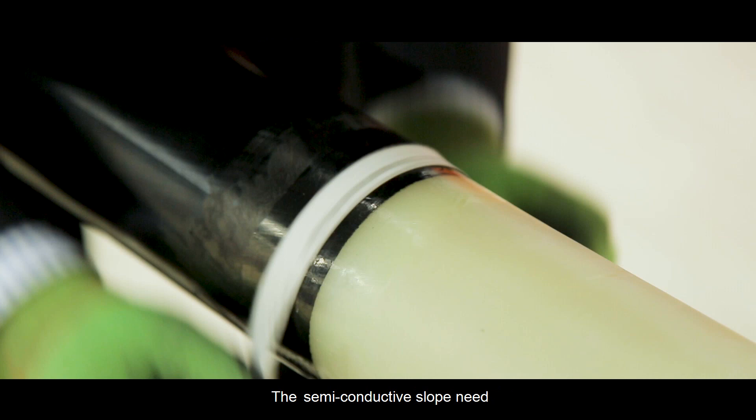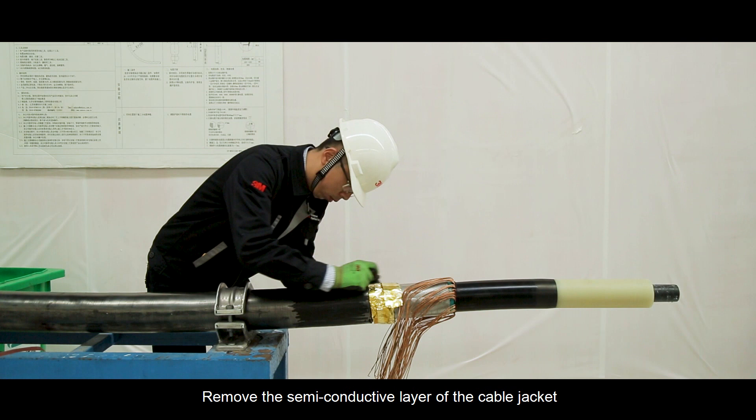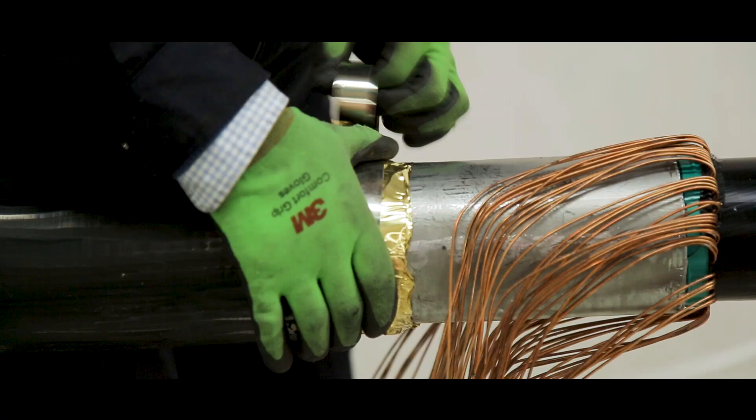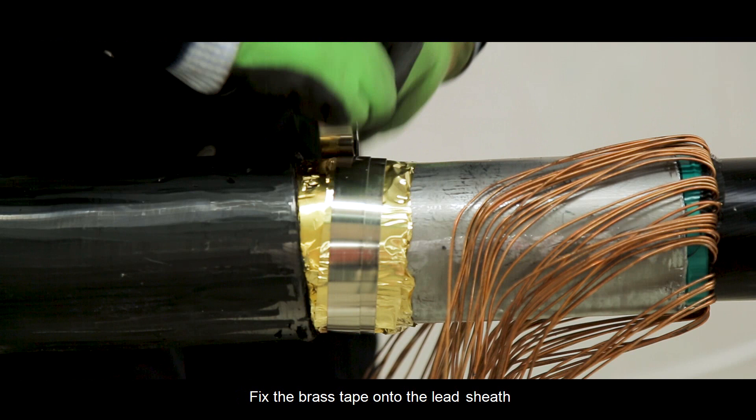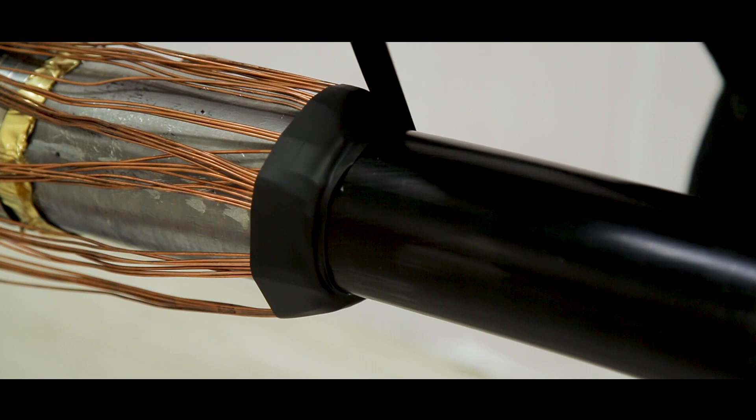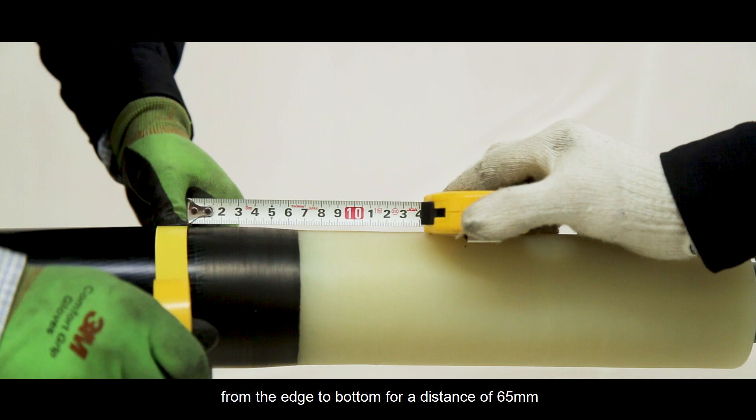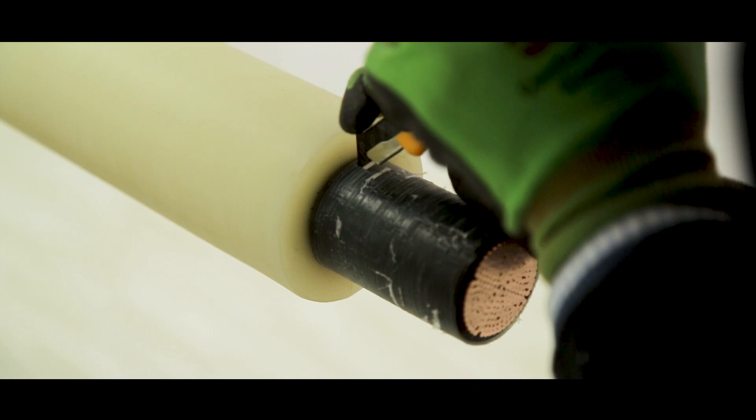Remove the semi-conductive layer of the cable jacket for a distance of 200mm to 300mm. Fix the brass tape onto the lead sheath using constant force springs. Make a mark on the semi-conductive layer from the edge to bottom for a distance of 65mm.